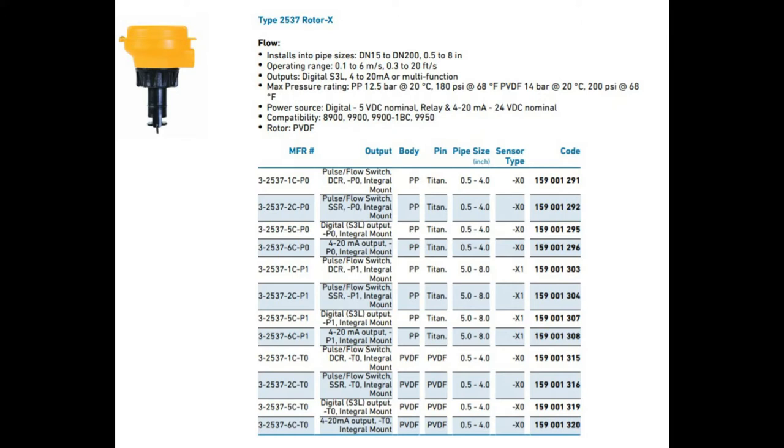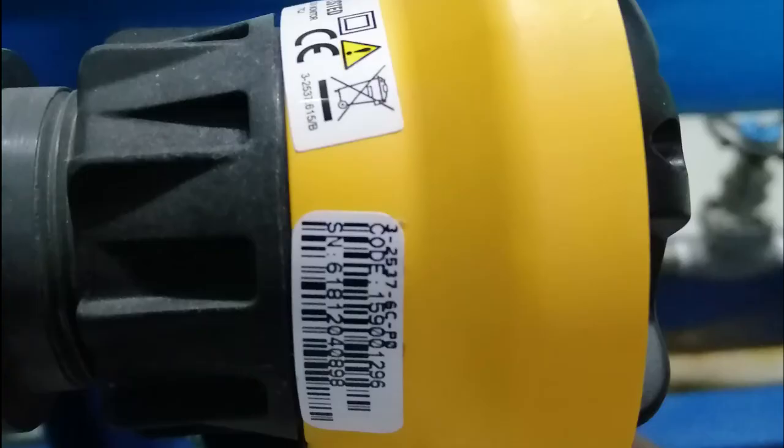Paddle wheels don't have replacement spares available in the market. You should order the whole sensor. There are a wide range of Signet 2537 paddle wheel flow meters depending on the pipe size, sensor type, and pressure capacity.